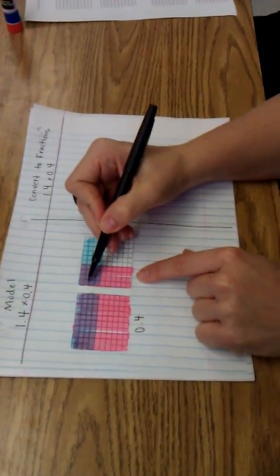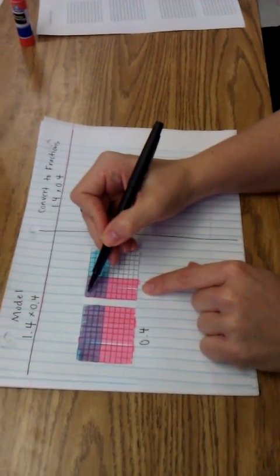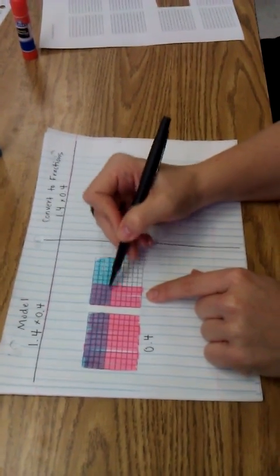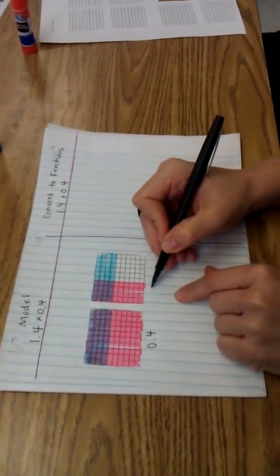This one has one, two, three, four, and one, two, three, four. So it's got four times four, so it's sixteen hundredths shaded.